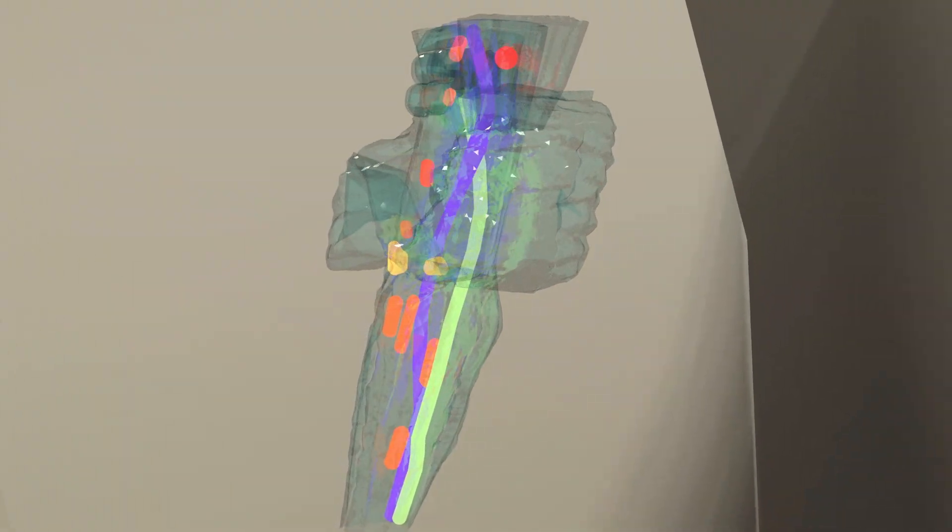The structures we're looking at are the different nuclei found in the brainstem, two important pathways, and then two bigger structures that are also very important.